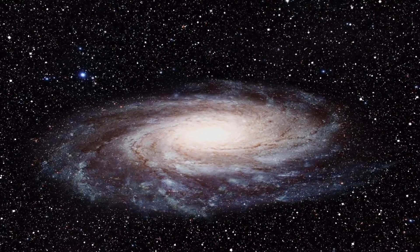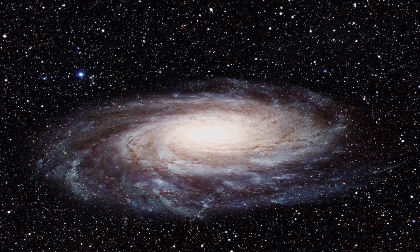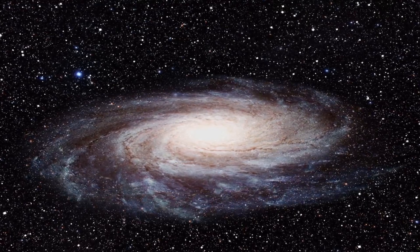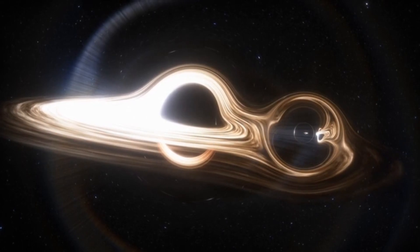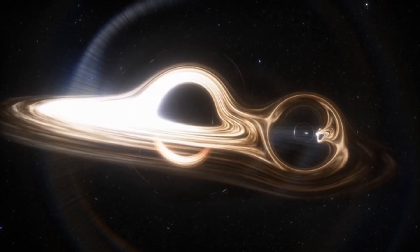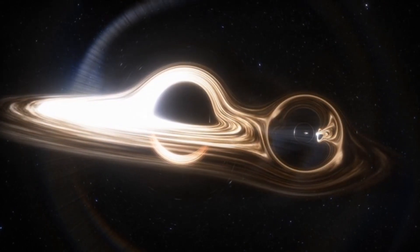They use a technique called Doppler Shift, where the gravity of the black hole affects the light of a nearby star, causing it to wobble back and forth. This wobble reveals the black hole's presence, just like a detective following clues.